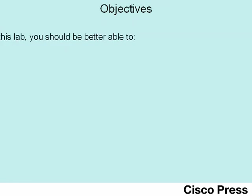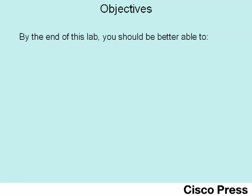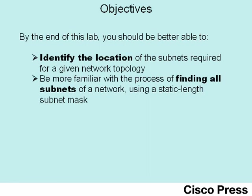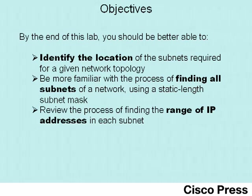This video lab has three main objectives. The first objective is to show an example of how to identify the location of the subnets required for a particular network topology. The second objective is to help you become more familiar with the process of finding all subnets of a given IP network, in particular when using a single or static length subnet mask. The third objective is to review the process of how to find the range of IP addresses in each subnet.